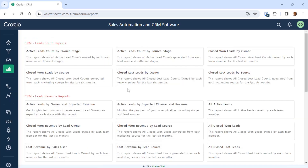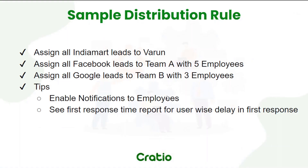These are all the things you need to take care of when distributing a lead. You need to set up a rule to distribute the lead, set up a notification so employees know a lead is assigned to them, and then monitor this report to see their response rate. If you do this, the automated distribution will give excellent results for you and your business. Thank you.